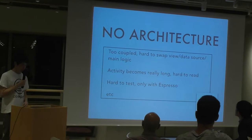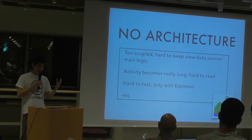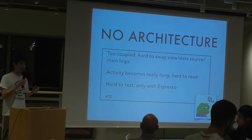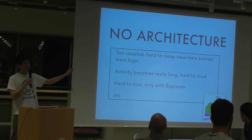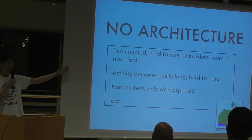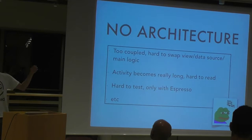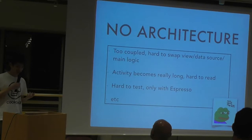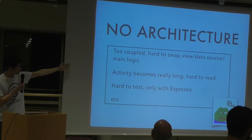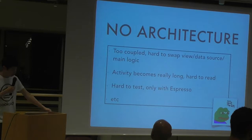Some disadvantages of using no architecture: everything is very highly coupled together. When you want to swap out a view — say you have a list view and a button to switch to a grid view — it's very difficult to do that because everything is bundled in one big activity. Activity is like the main controller of the app. It's also pretty hard to swap out the data source and the main logic. Activity becomes really long and it's very hard to test.